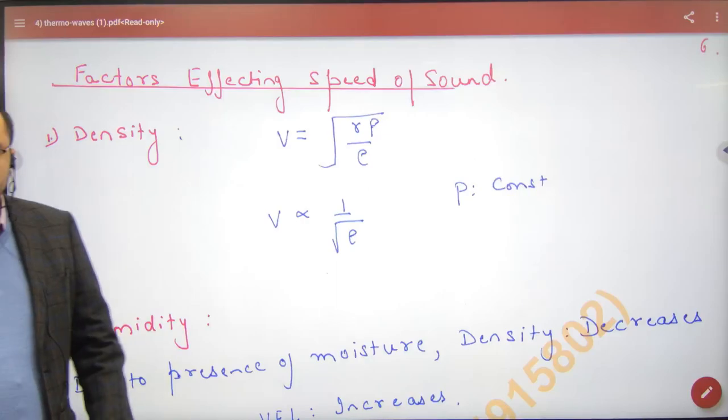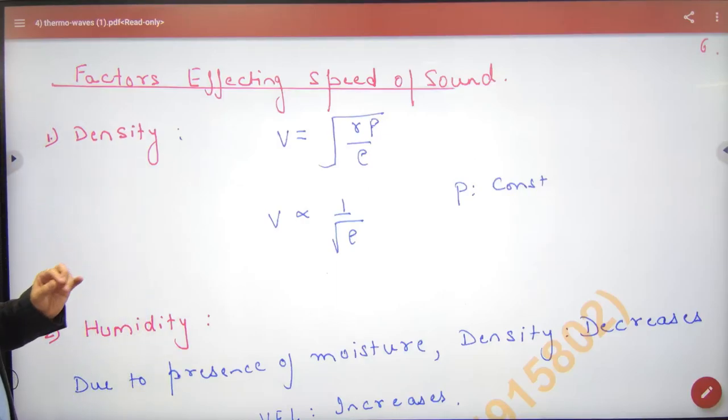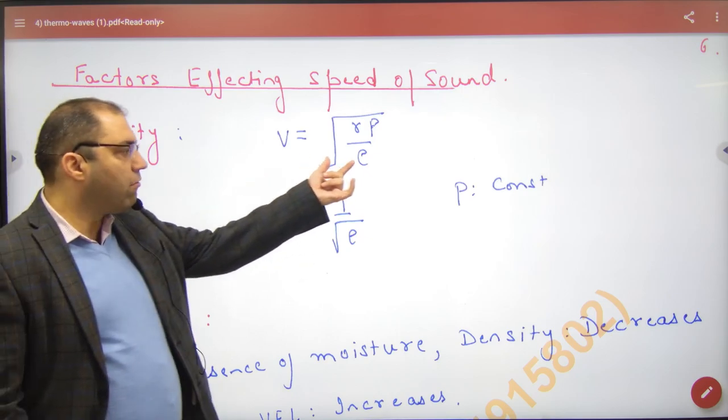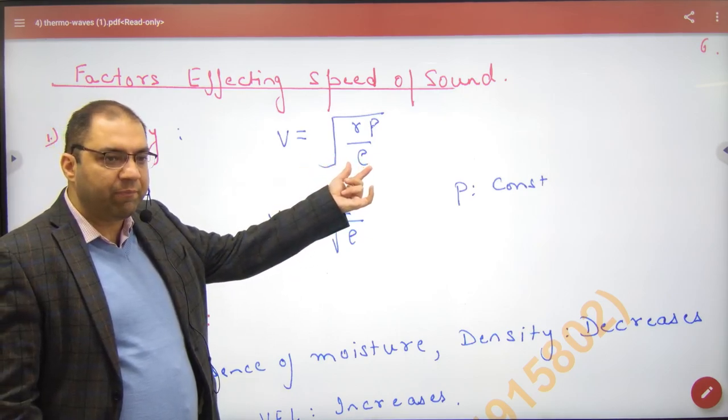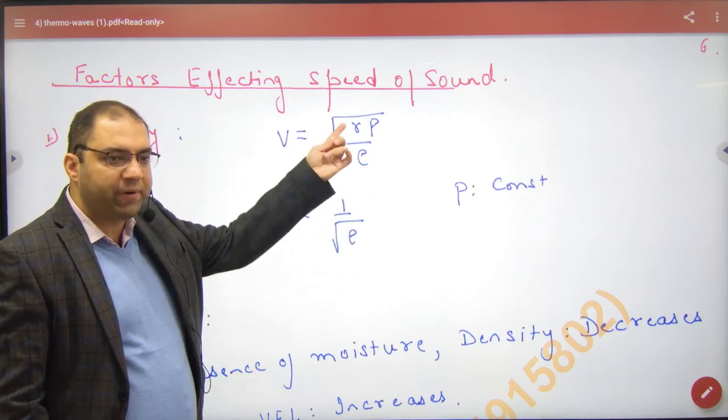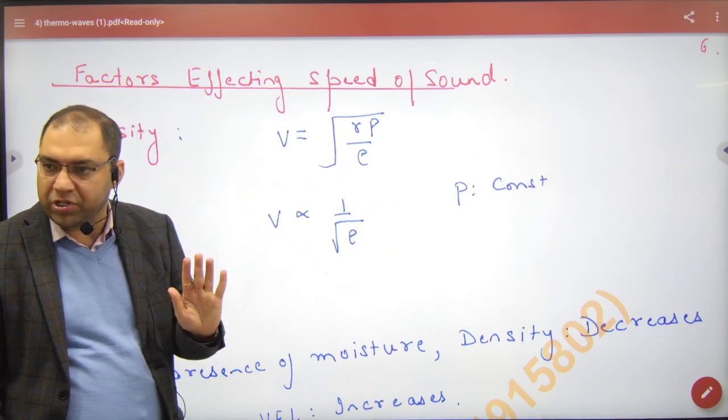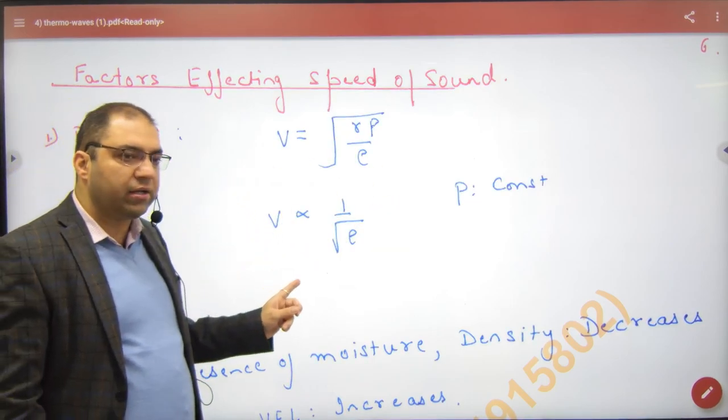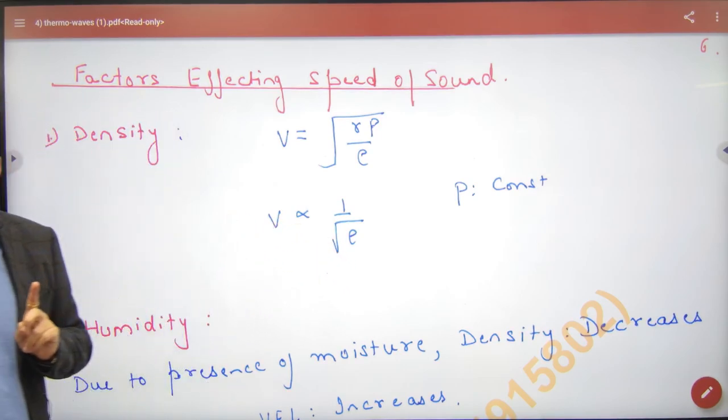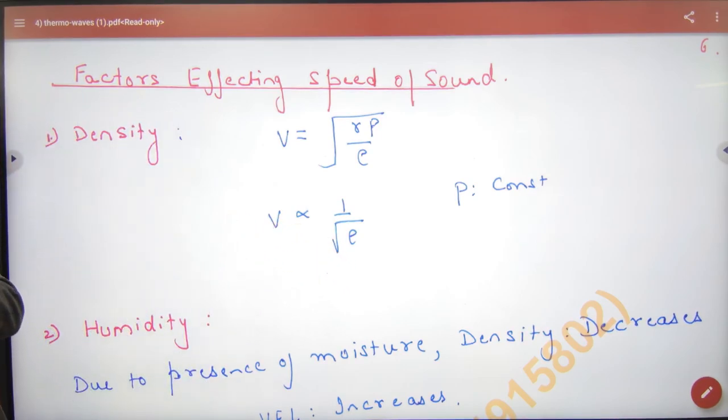So factors affecting speed of sound - the first factor is density. This is the velocity formula. Velocity is inversely proportional to the square root of density, assuming pressure to be constant. If gas density is less than the gas, the velocity of sound is less than the gas.